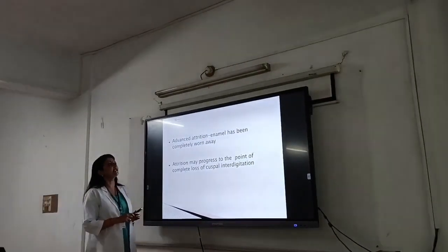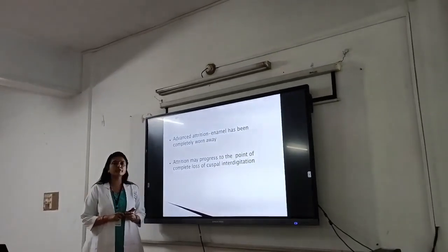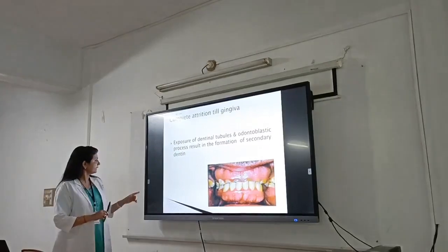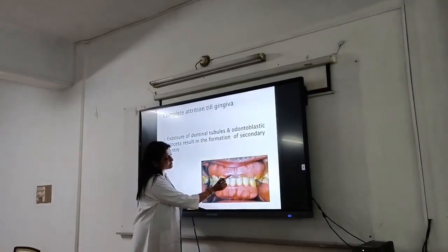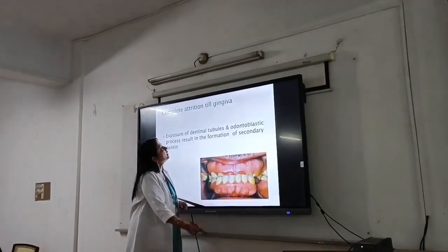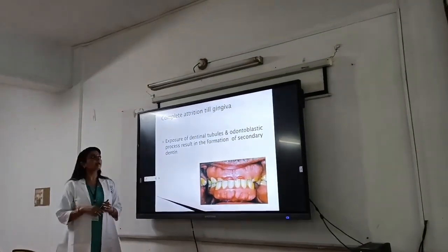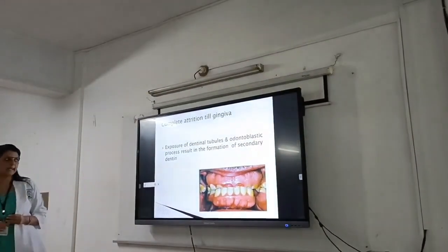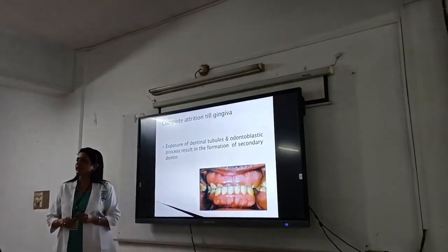In advanced cases of attrition, the enamel has been completely worn away, and attrition can progress to the point of complete loss of the crown. This is a case showing severe attrition where only a small portion of the crown is seen. There is also the possibility of exposure of the dental pulp, and as a compensatory process, secondary dentin or reparative dentin is formed to oppose the exposure of the dental pulp.